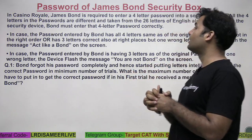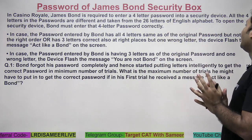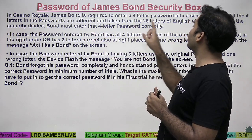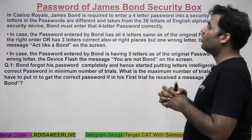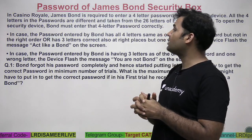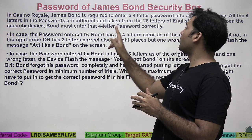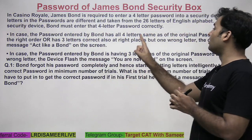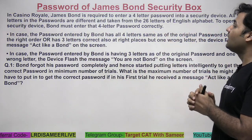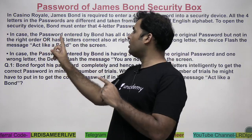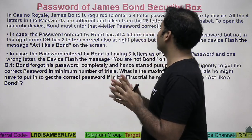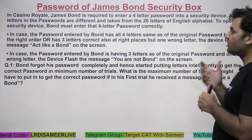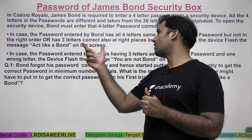The question says: In Casino Royale, James Bond is required to enter a four-letter password into a security device. All four letters in the password are different and taken from the 26 letters of the English alphabet. To open the security device, Bond must enter that four-letter password correctly. In case the password entered by Bond has all four letters the same as the original password but not in the right order, or has three letters correct at right places but one wrong letter, then the device flashes the message 'act like a Bond' on the screen.